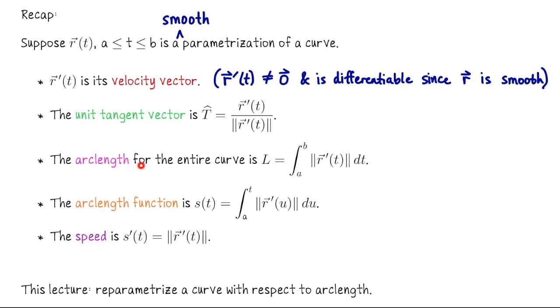Then we saw that the arc length for the entire curve, so if I want to take this parametrization from a to b and compute the total length of the curve that it sweeps out in space, that's the integral from a to b of the speed dt, so the integral from a to b of the length of r prime dt.